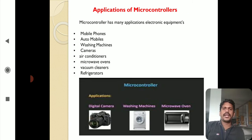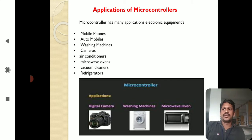Microcontrollers are used in a wide variety of applications including mobile phones, automobiles, washing machines, cameras, air conditioners, microwave ovens, vacuum cleaners, and refrigerators. Microcontrollers are used for single-purpose controlling devices — for example, in a washing machine, the microcontroller controls the washing process cycle.